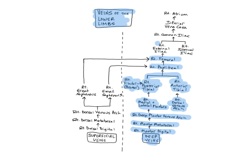The external iliac veins are deep veins of the pelvis that begin as continuations of the femoral veins, and join with the internal iliac veins to form the common iliac veins. The word iliac refers to the ilium, the superior part of the pelvic bone. They drain the anterior portion of the lower abdominal wall, external genitals, and lower limbs.